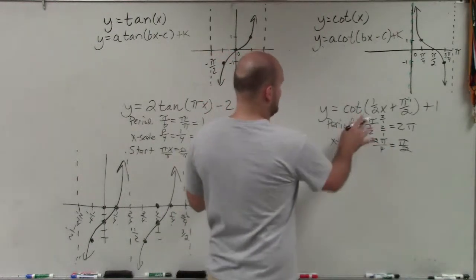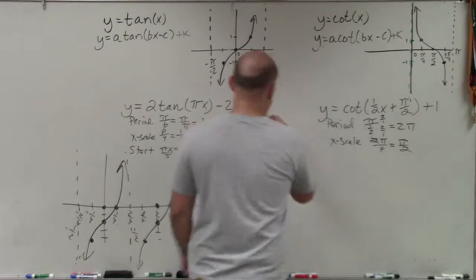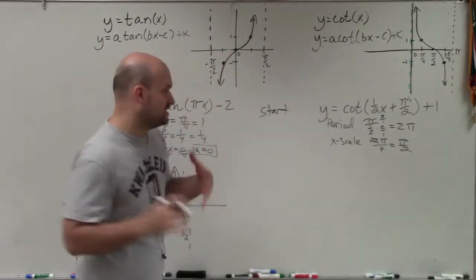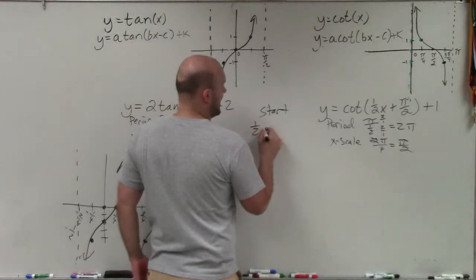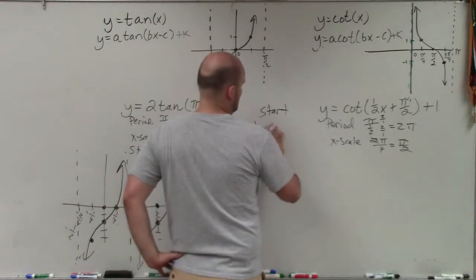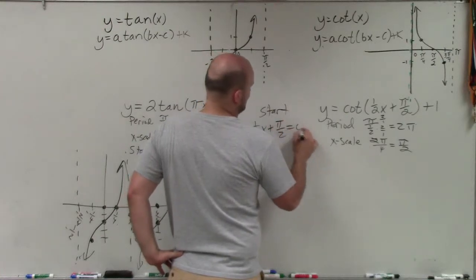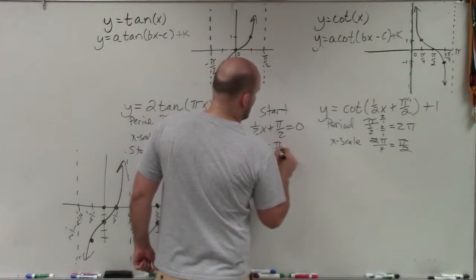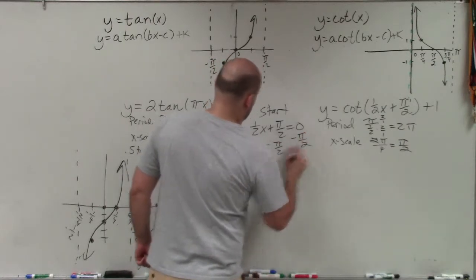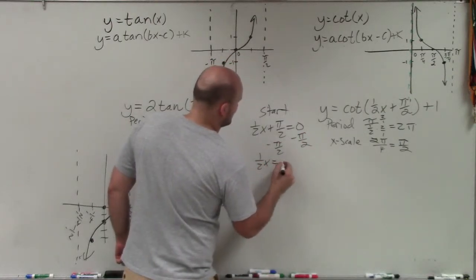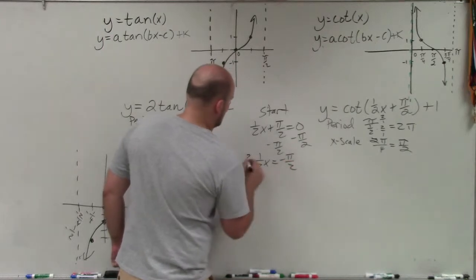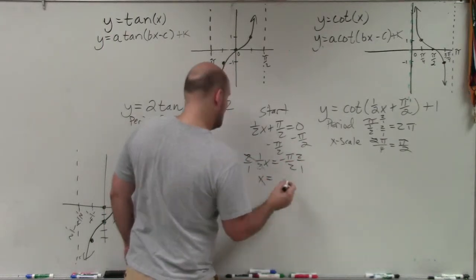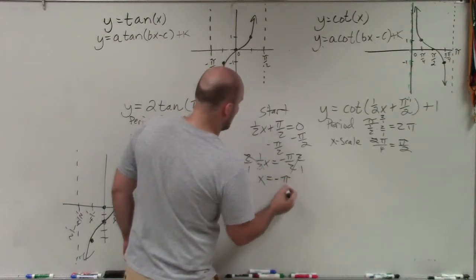Our start is going to be basically, if you remember, we basically take whatever's inside of our function set equal to 0. So I have 1/2 x plus π/2 equal to 0. Well, now we've got to solve for 0. So the first thing I do is subtract π/2. And then I have 1/2 x equals negative π/2. Then I multiply by the reciprocal, and I get x equals negative π.